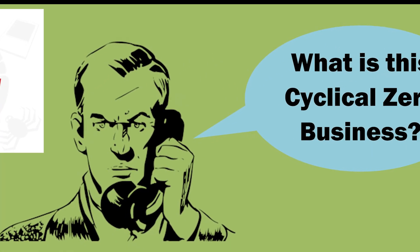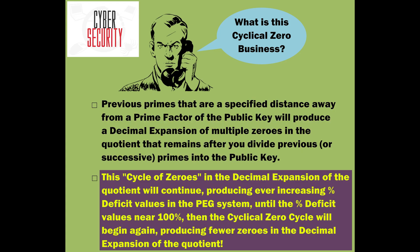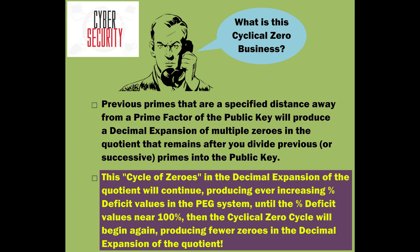What is this cyclical zero business? Previous primes that are a specified distance away from a prime factor of the public key will produce a decimal expansion of multiple zeros in the quotient that remains after you divide previous or successive primes into the public key. This cycle of zeros in the decimal expansion of the quotient will continue, producing ever-increasing percentage deficit values in the peg system, until the percentage deficit values near 100%. Then the cyclical zero cycle will begin again, producing fewer zeros in the decimal expansion of the quotient.